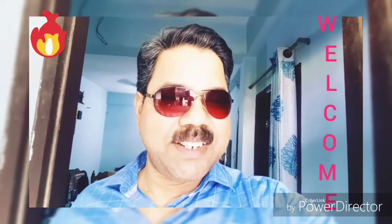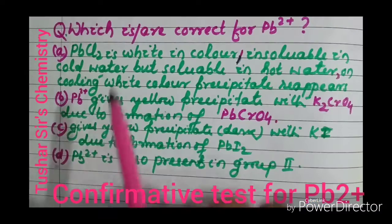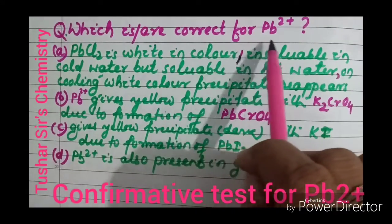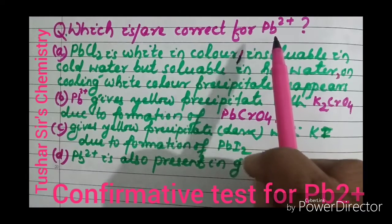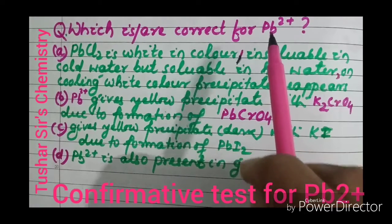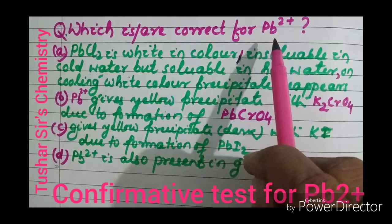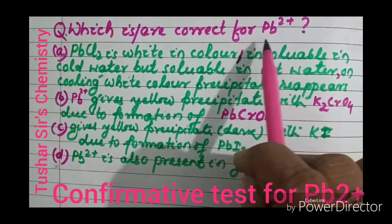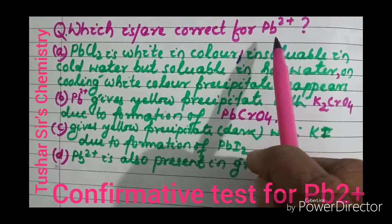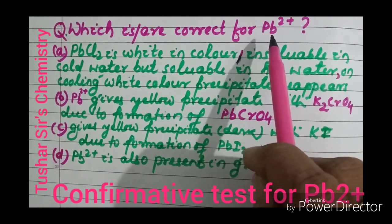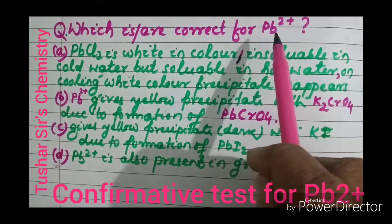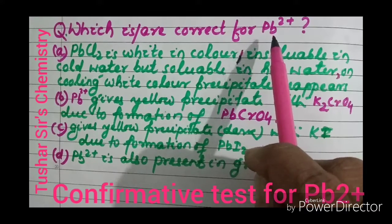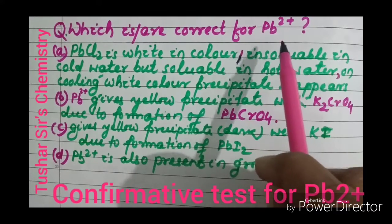Welcome once again to my channel. This is a correction for Pb²⁺. Pb²⁺ is a basic radical present in Group 1, or it is a cation present in Group 1. If a salt contains Pb²⁺ as a cation, in dilute HCl it gives a white precipitate.